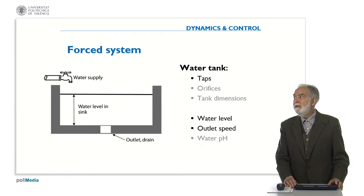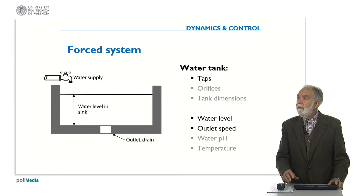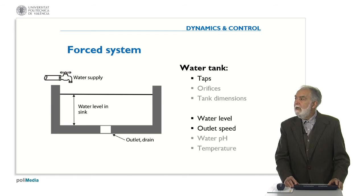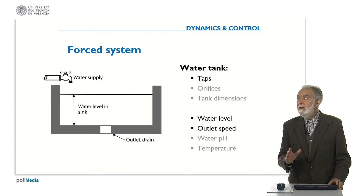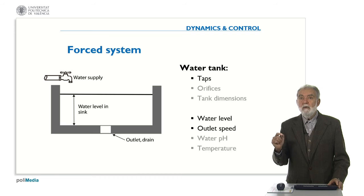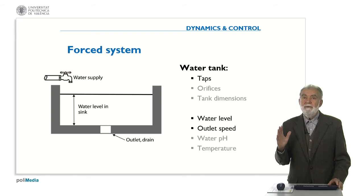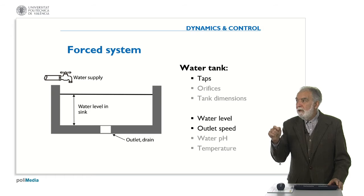For instance, now we have here a tank, a water tank. There are some taps we can open or close — more open, more closed. There are some orifices where the water can be extracted or going out. What is important for us is the water level. There are some other variables which are fixed magnitudes, like the tank dimensions or the number of orifices, and there are other variables like the water pH or the concentration of some product that we are not interested in for our model. In this way, we say we are going to draw a partial representation of the behavior of the tank.